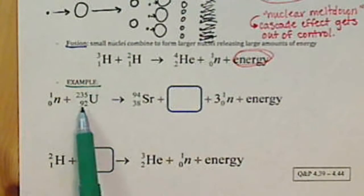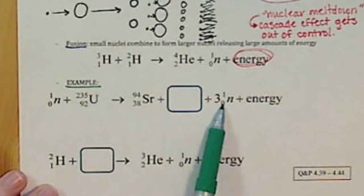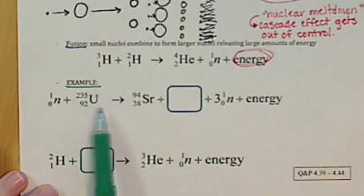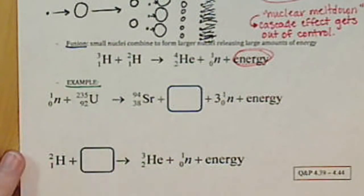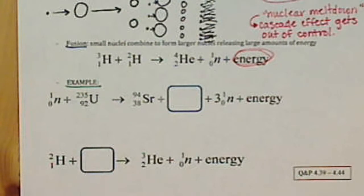So all of our mass numbers need to be conserved. These are atomic numbers. So our atomic numbers need to be conserved and our mass numbers need to be conserved. These are just a little bit more complicated than the first examples that we worked through because we have many more symbols that we're dealing with.